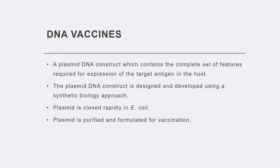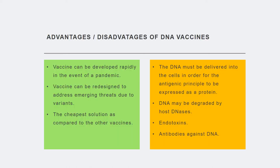Among the many vaccines, we will be looking at plasmid-based vaccines which can be cloned in E. coli and purified. These vaccines offer rapid deployment and developmental processes as well as low cost. However, they have certain disadvantages which we will discuss, including the presence of endotoxins and the antibodies which may be elicited against the DNA itself.